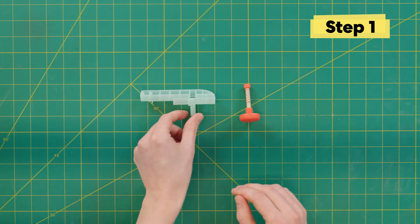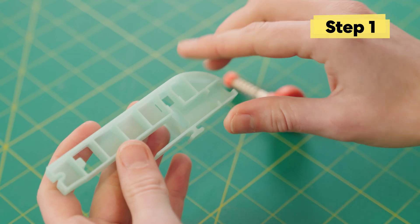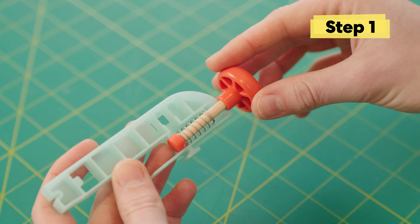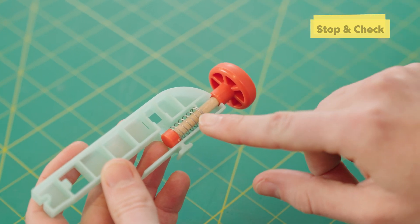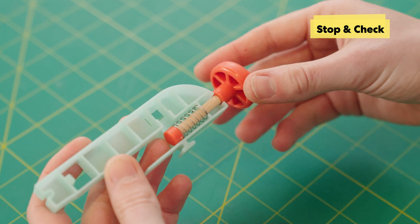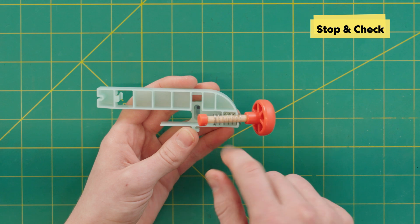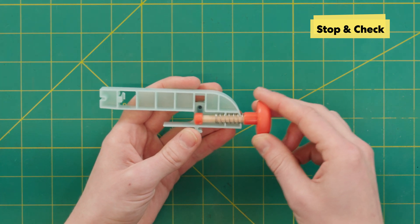First we're going to assemble the plunger. Find this light blue piece and orient it just like this. Then we're going to take the plunger and slide it in so that the spring is in front of this little gate right here. When you pull the plunger back, it should want to spring forward. If not, double check that the spring is in the correct position.